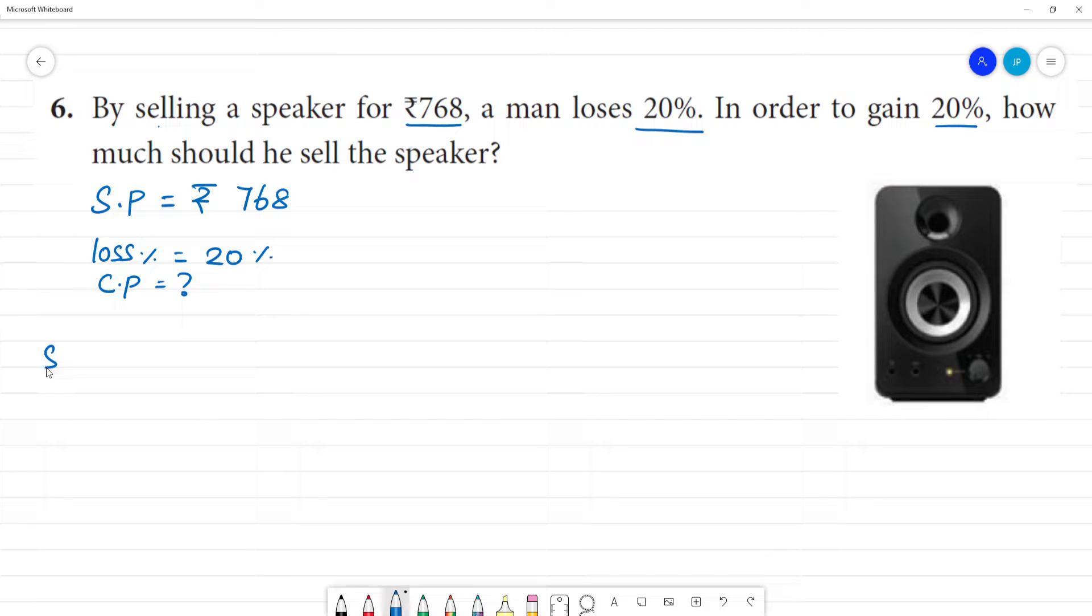What do we need to calculate? We need to calculate the formula. SP is equal to 100 minus loss percentage divided by 100 into CP. So, SP is 768.